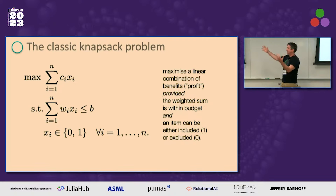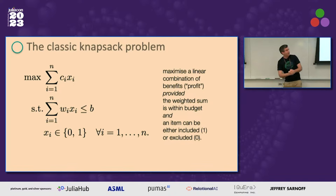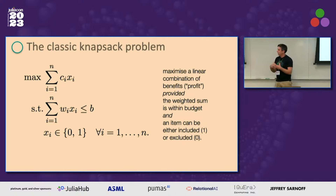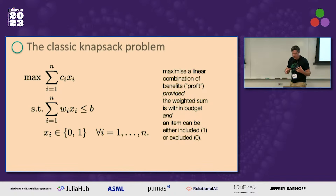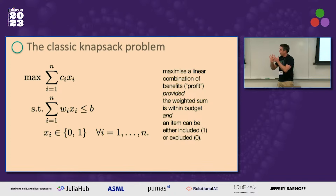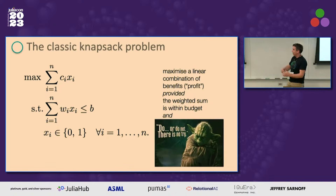The classic knapsack problem — everyone uses this to get going. We want to maximize a linear combination of so-called benefits: the C_i's are the data of the problem, representing some sort of profit or benefit from a choice. We have a weighted sum within some budget B, where the weights W_i correspond to the weight of each choice. We constrain our decision variables to be zero or one — an item can either be included or excluded. Do or do not, there is no try when it comes to binary variables.